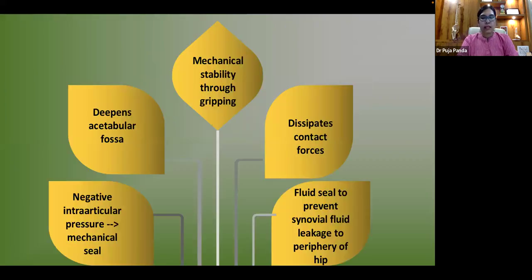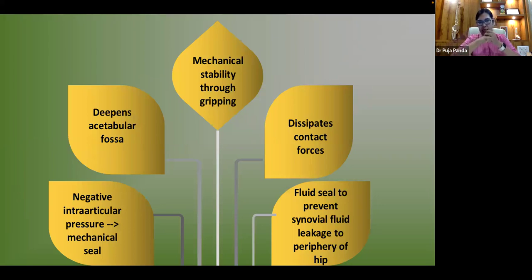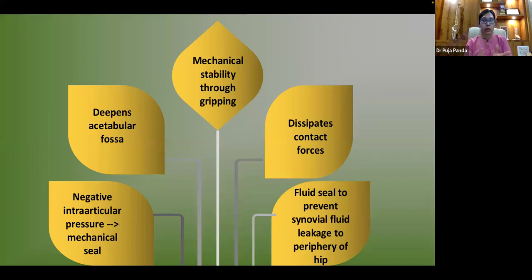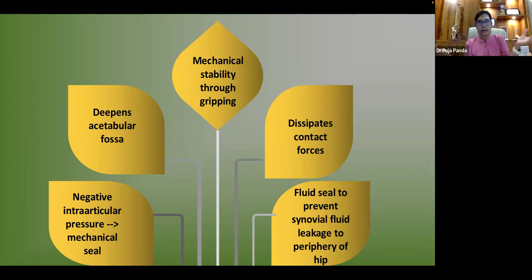The functions of the labrum include: creating negative intra-articular pressure, acting as a seal for joint stability, deepening the acetabular socket, providing mechanical stability through gripping, dissipating contact forces by increasing surface area, and creating a fluid seal to prevent synovial fluid leakage to the periphery.